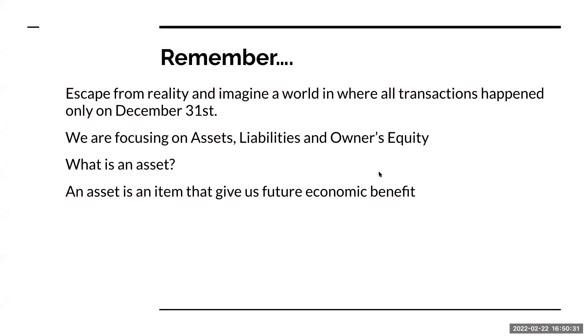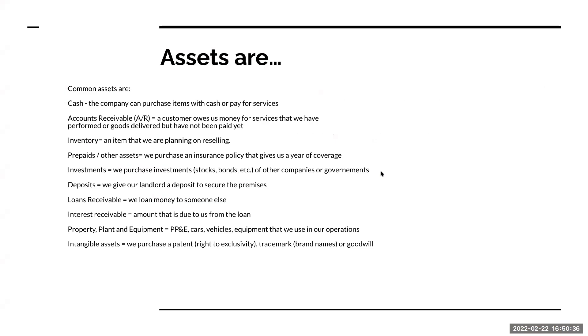What exactly is an asset? An asset is going to be an item that gives us future economic benefit. What is an asset? Cash. I can use that cash to go through and purchase items, or I can pay for services.